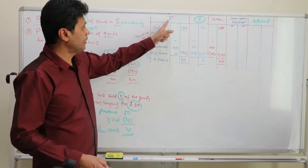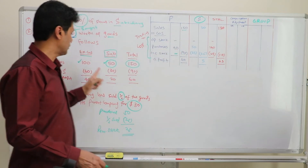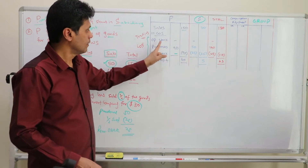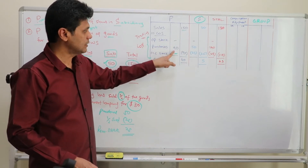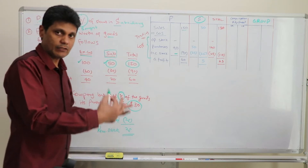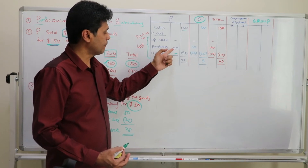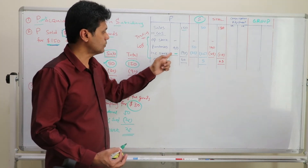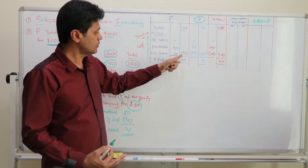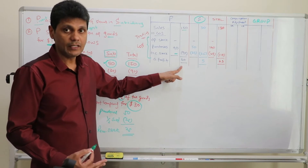When you take the parent company, the total sales value will be $150 because they sold $100 plus $50. There is no opening stock. The total purchases was $90 because they bought $90 worth of goods, and the entire goods have been sold. So the closing stock will be $0 and the cost of goods sold will be $90. The profit recognized by the parent company will be $60.